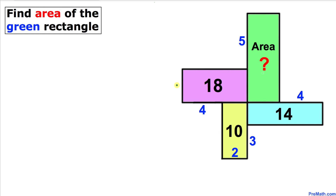Welcome to pre-math. In this video tutorial we have four rectangles as shown in the figure, such that the area of the yellow rectangle is 10, the purple rectangle is 18, the blue rectangle is 14, and we are going to calculate the area of the green rectangle. The side lengths of these rectangles are given as two, three, four, five, and four.